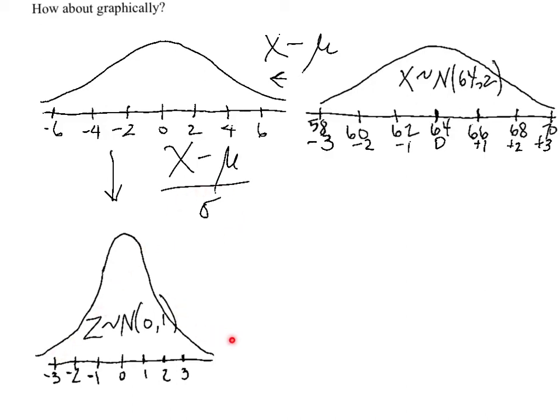And we get the standard normal curve, just like we intuitively understood that 64 should be 0 standard deviations from the mean. 66 is positive 1 standard deviation from the mean. 62 is negative 1 standard deviation from the mean. We've now mathematically found a way of representing this transformation.